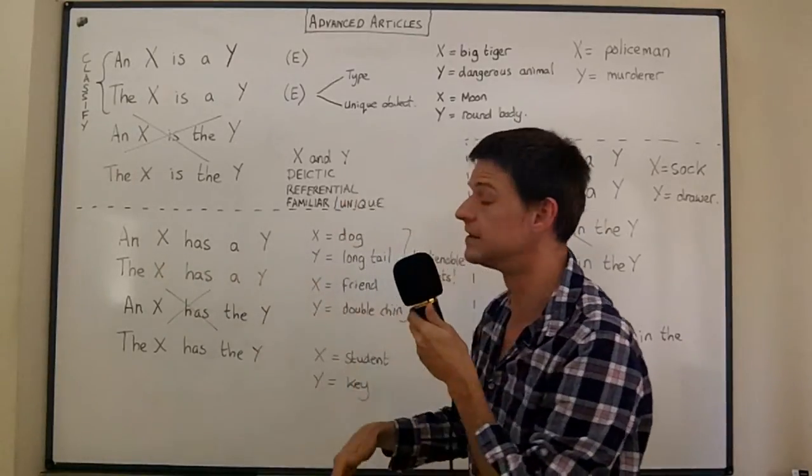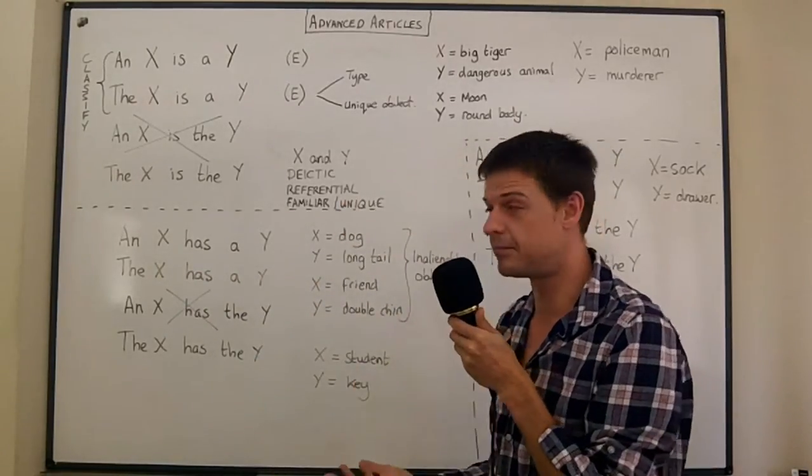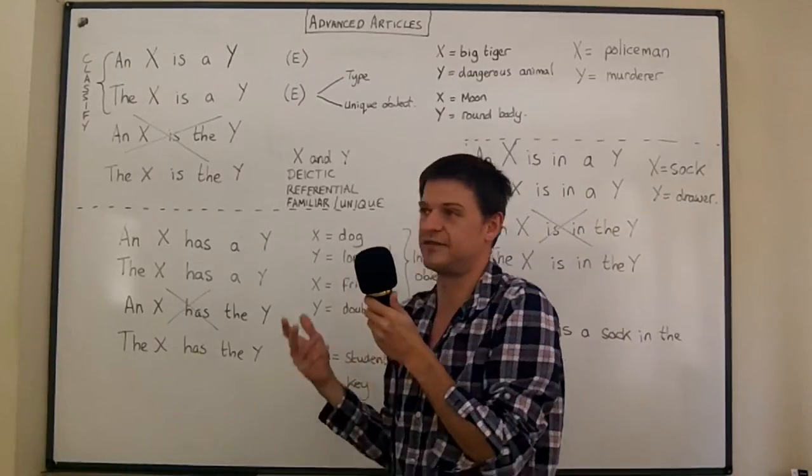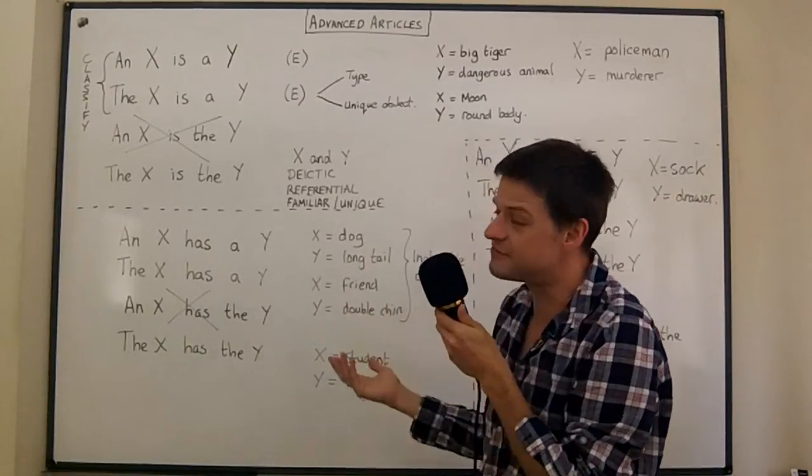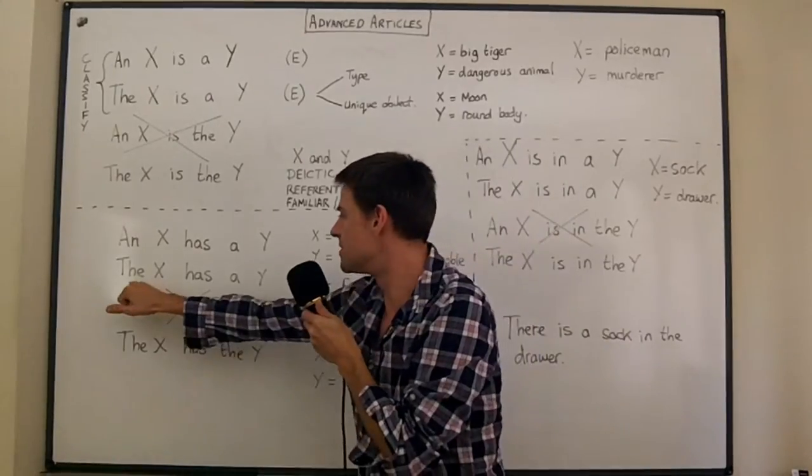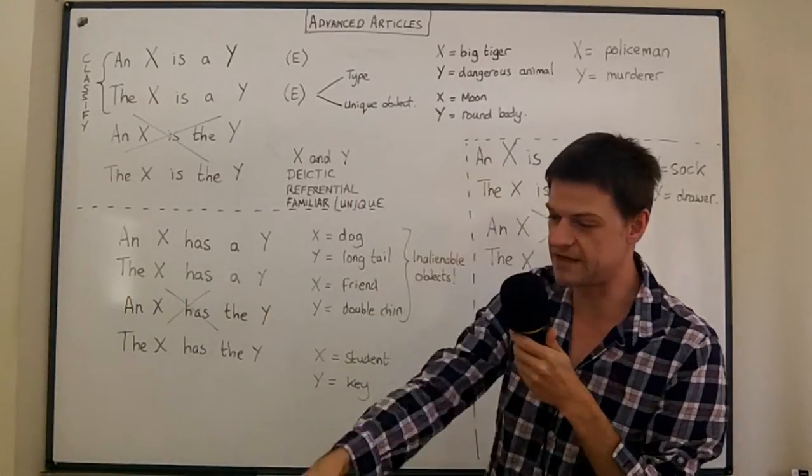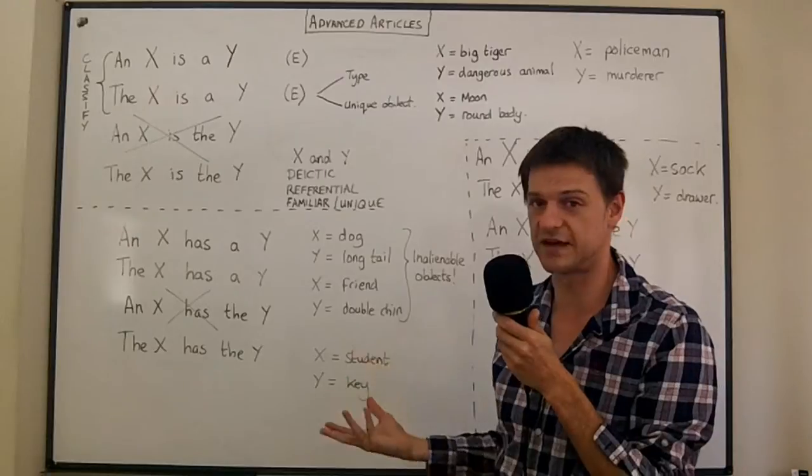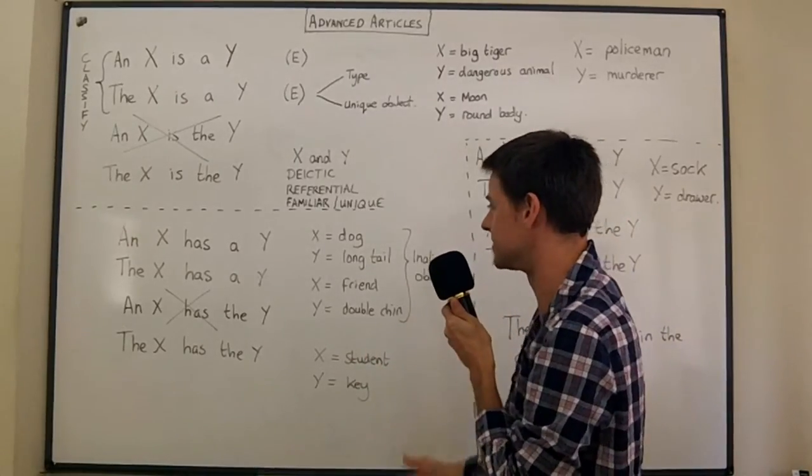A dog has a long tail - very light on information but possible. You're just saying that any dog has any long tail. It's very rare you'd use that. The dog has a long tail - you mean that dog down there and you're saying that it has a long tail. This is great, it's perfectly acceptable.